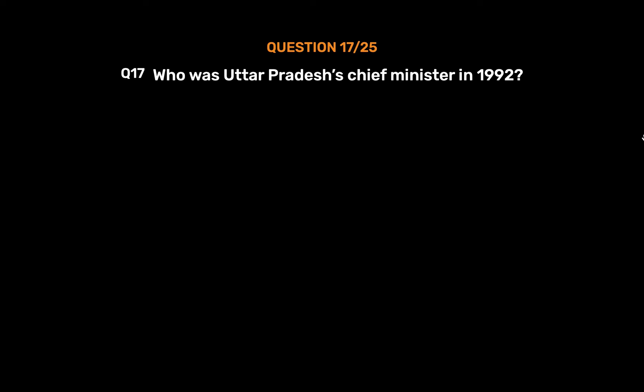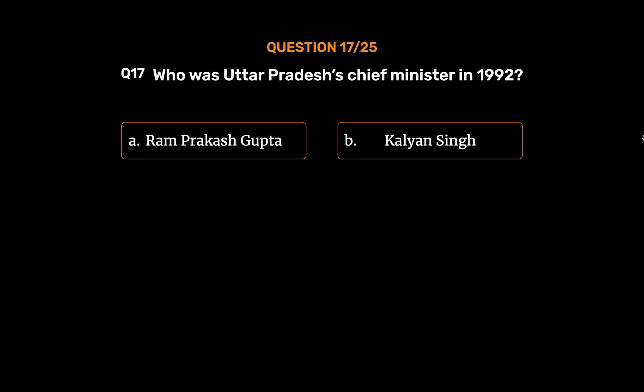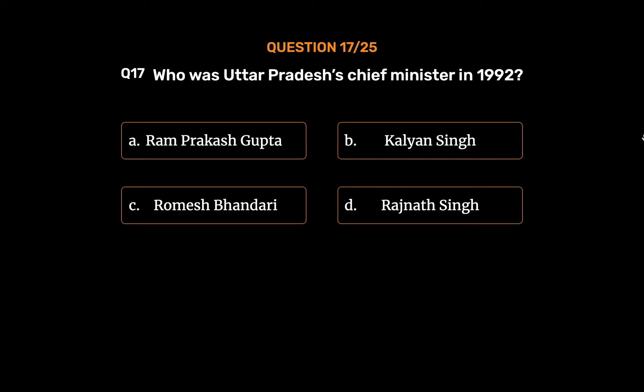Question No. 17: Who was Uttar Pradesh's chief minister in 1992? Option A: Ram Prakash Gupta. Option B: Kalyan Singh. Option C: Romesh Bhandari. Option D: Rajnath Singh. The correct answer is Option B: Kalyan Singh.